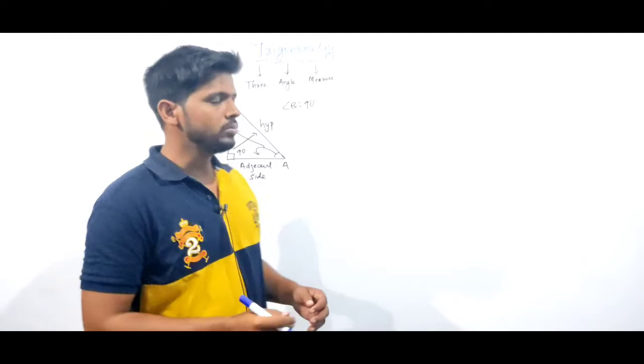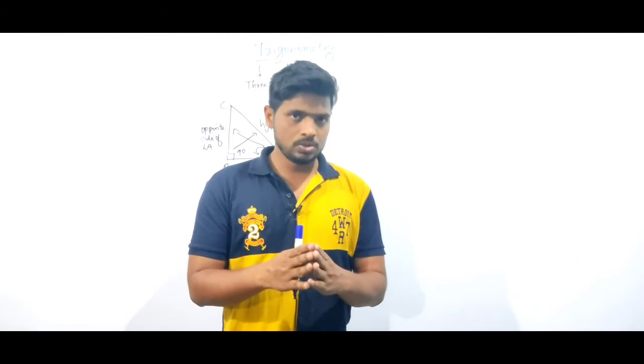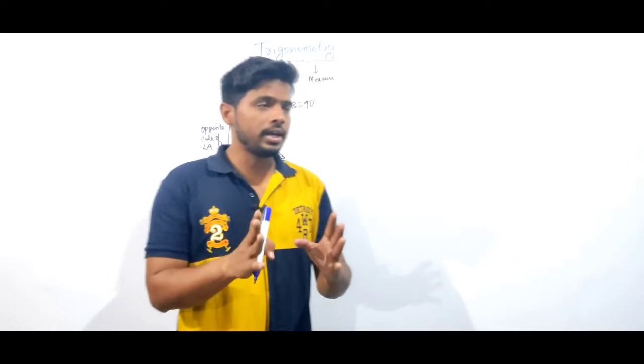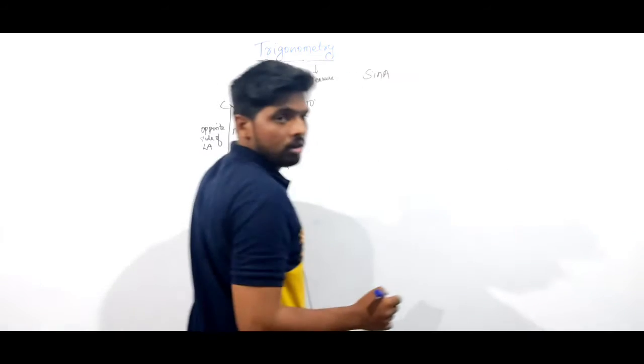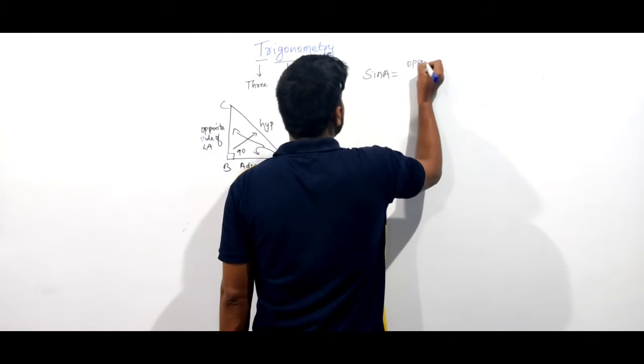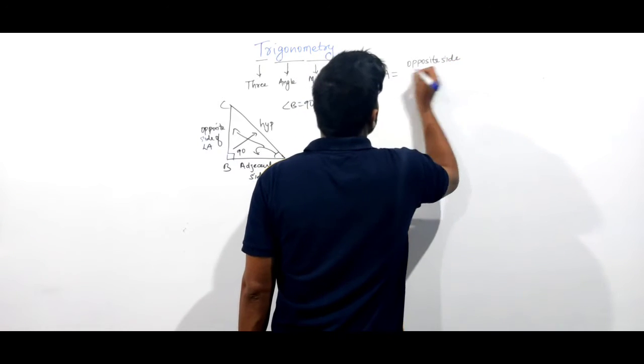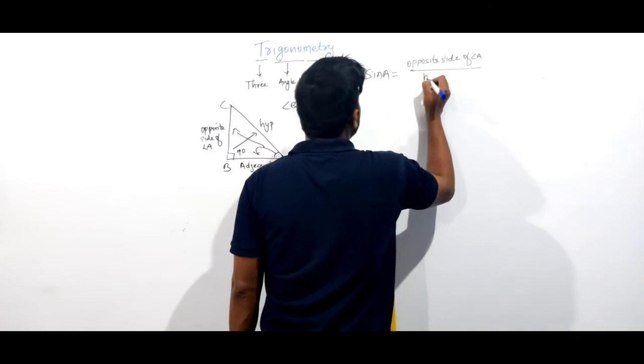Now, we are going to learn about the trigonometrical ratios or the relation between angles and sides. First ratio is sin A. Sin A is equal to opposite side of angle A divided by hypotenuse.